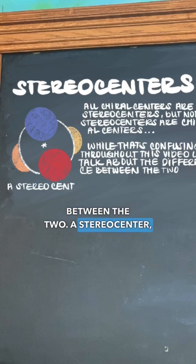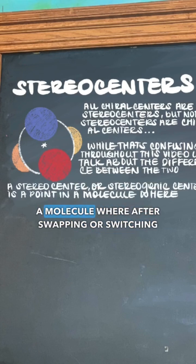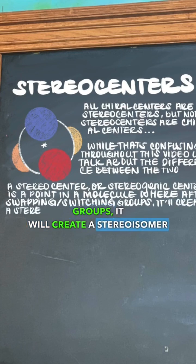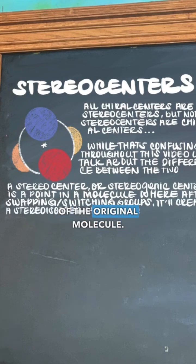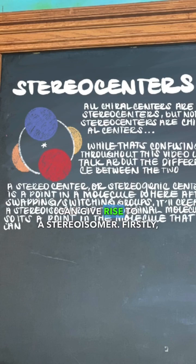A stereocenter, or stereogenic center, is a point in a molecule where after swapping or switching groups, it'll create a stereoisomer of the original molecule. So it's a point in a molecule that can give rise to a stereoisomer.